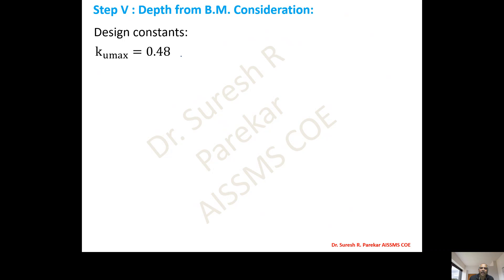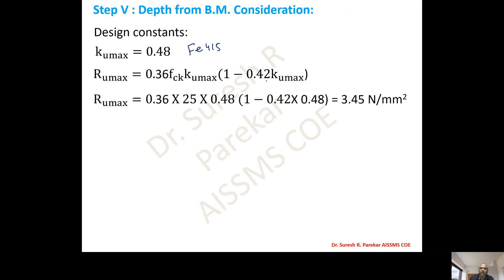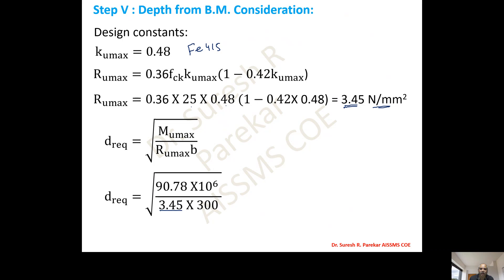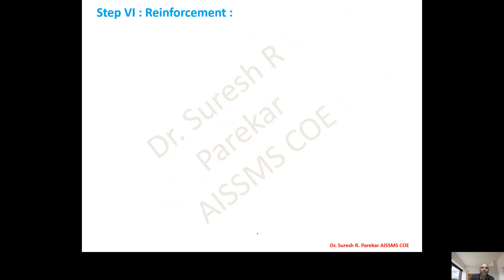Depth check from bending moment: For Fe415, x_u,max/d = 0.48. R_u,max = 0.36 × f_ck × (x_u,max/d) × [1 − 0.42 × (x_u,max/d)] = 0.36 × 25 × 0.48 × (1 − 0.42 × 0.48) = 3.45 N/mm². Required d = √(M_u / (R_u,max × b)) = √(90.78 × 10⁶ / (3.45 × 300)) = 296.16 mm. Provided d = 310 mm — OK.